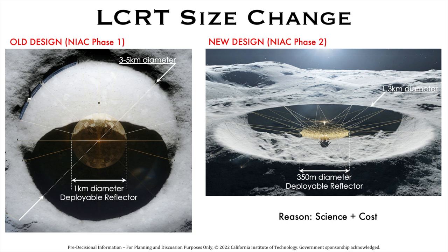In NIAC phase 1, we were planning to build a 1 km diameter telescope in a 3 to 5 km diameter crater. During NIAC phase 2, we reduced LCRT size to 350 meter diameter since we proved that it was possible to obtain the signs with this smaller size.